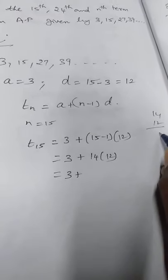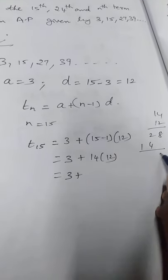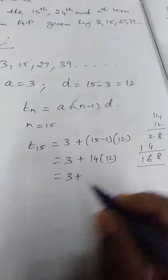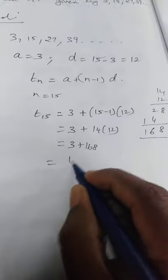Is equal to 3 plus 14 into 12 is equal to 3 plus 14, 12s are 168. The answer is 3 plus 168, 171.